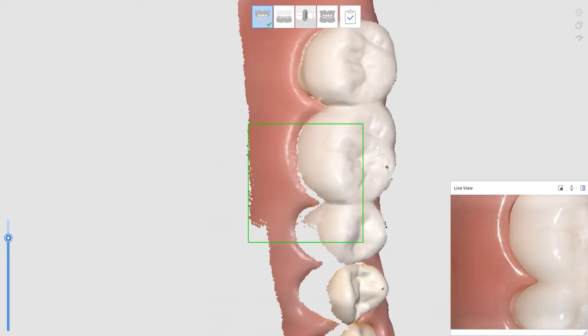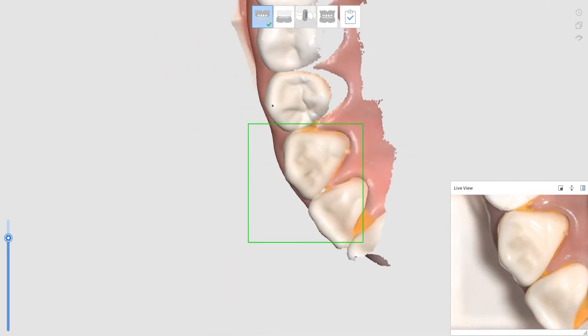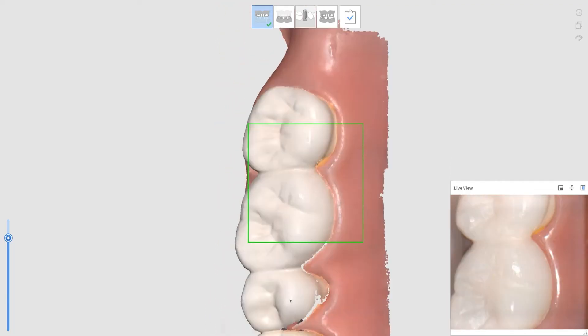According to the scan strategy, start scanning the occlusal surface of the maxilla from the last molar to the incisors.